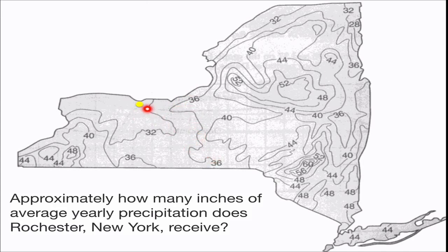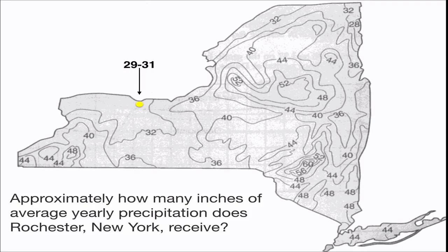Following the 32-inch line, anywhere on that line equals 32 inches of rain on yearly average. Since Rochester is not on the line, the value must be less than 32. The iso lines go by increments of 4 — 32, 36, 40, 44, 48 — so the value is not lower than 28. On a real test question, any answer between 29 and 31 would be totally acceptable, showing you're below 32 but not as low as 28, since a new line would be drawn at that value.